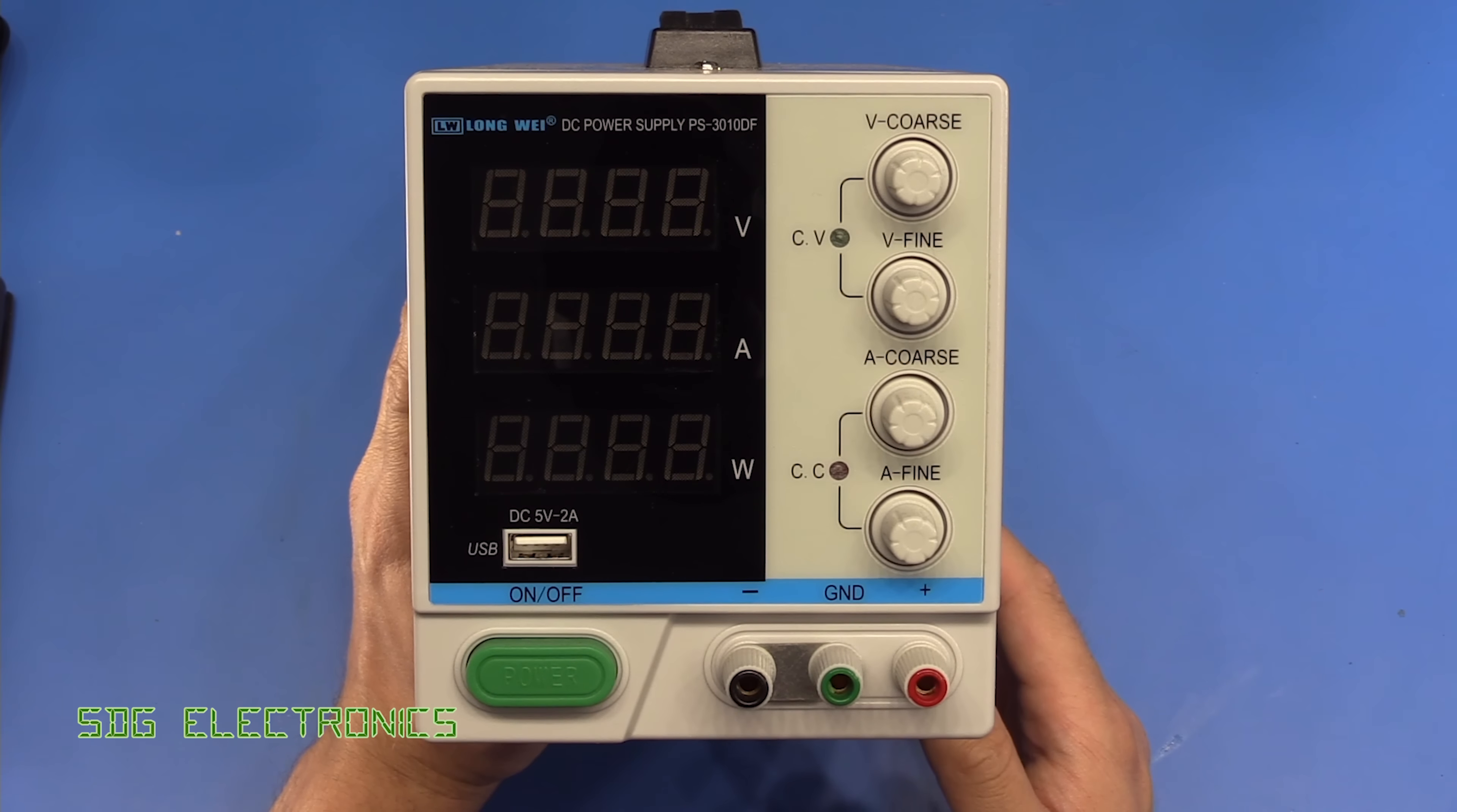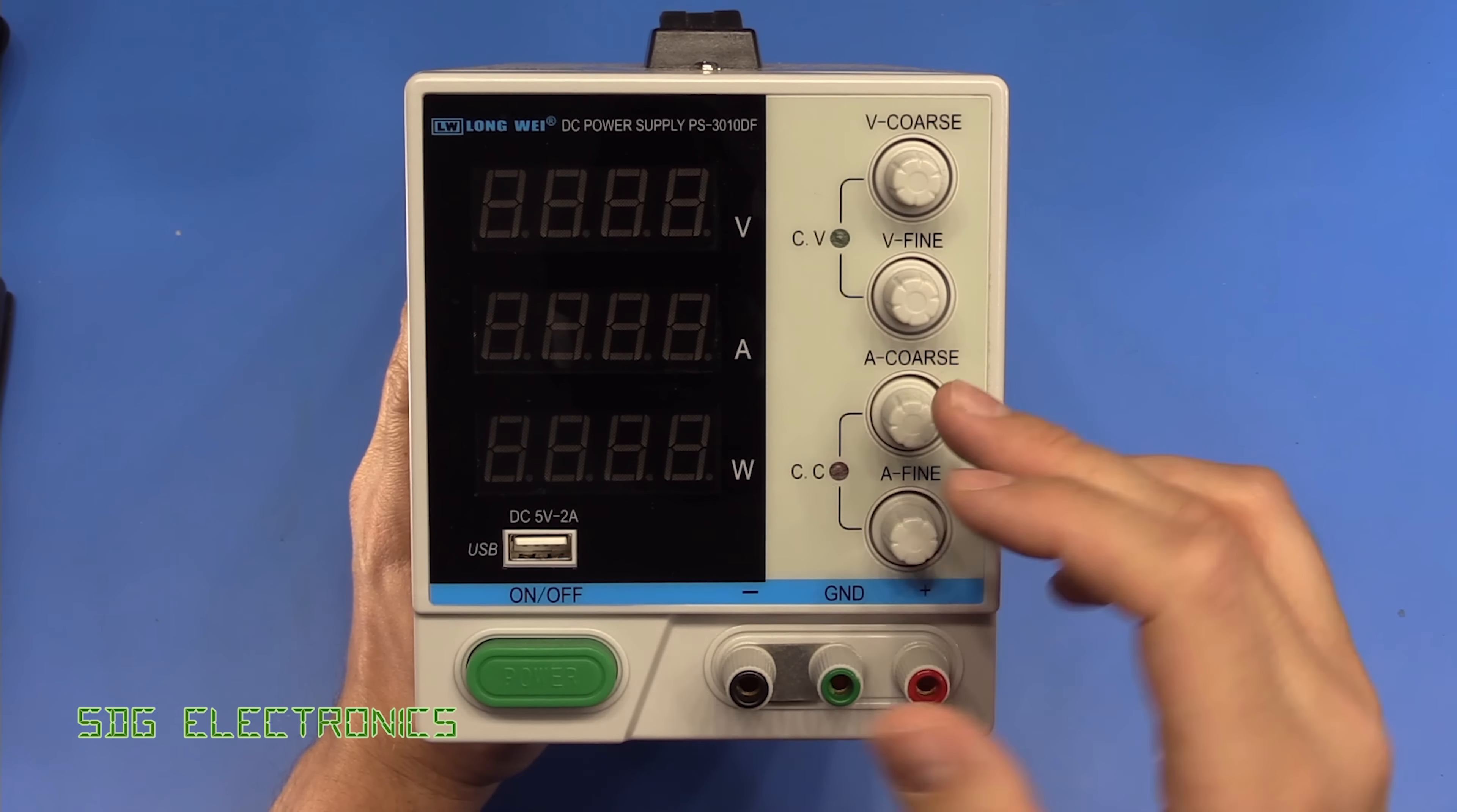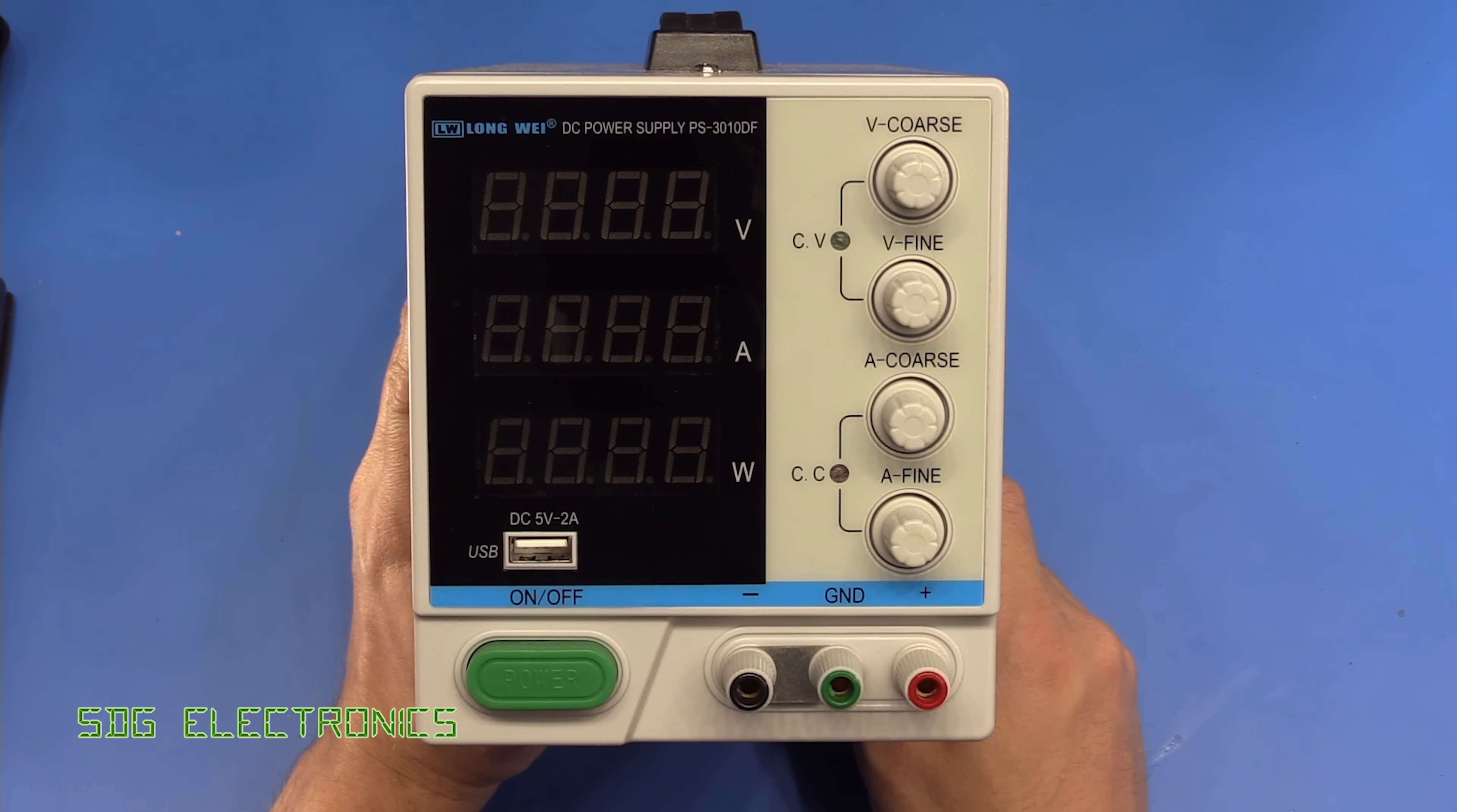Hi, today we're going to look at this bench power supply. It's made by the brand Longui, or Longui, I'm not sure, but this is the 30 volt 10 amp model, the PS3010.